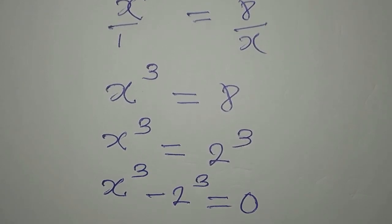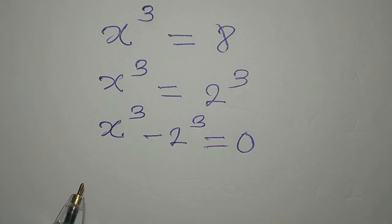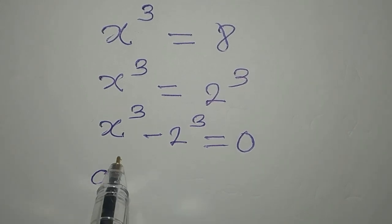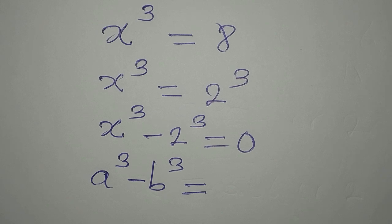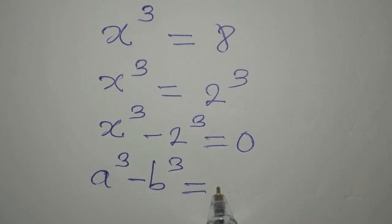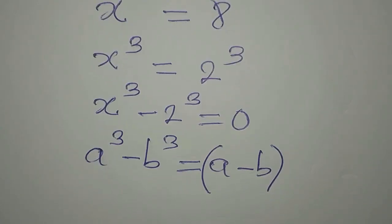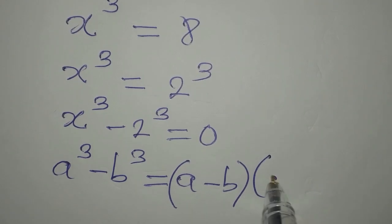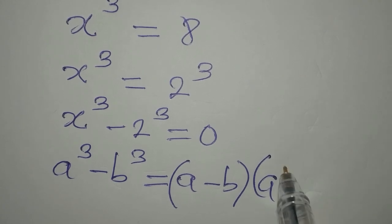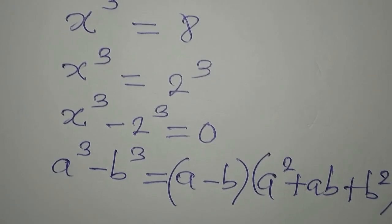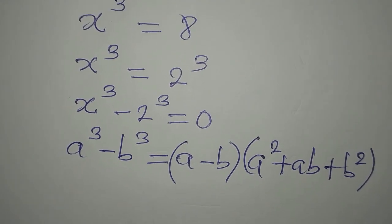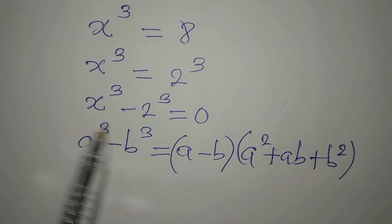x to the power of 3 minus 2 to the power of 3 equals 0. We are going to apply the difference of two cubes. If you have a cubed minus b cubed — the difference of two terms raised to the power of 3 — this gives us (a minus b) times (a squared plus ab plus b squared).